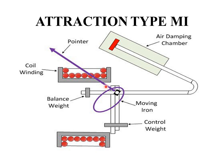This is the construction of an attraction type moving iron instrument. Here there are stationary coil windings and an iron core, which is the moving part — hence this type is known as the moving iron instrument. The iron core is in the shape of a flat disc. When current flows through the coil it creates a magnetic field, and because of this magnetic field the iron gets attracted towards it.